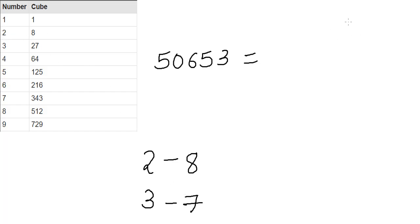So let's look at this number. The cube root of 50653 we can get by looking at the unit's digit 3, and as we saw here that 3 forms a pair with 7. So the cube root of this number will have its unit's digit as 7.